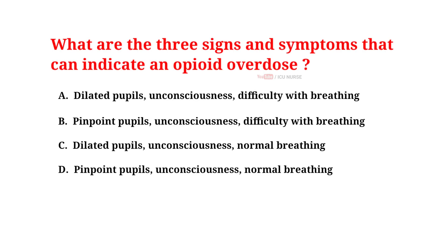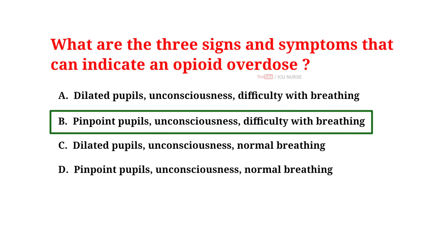What are the 3 signs and symptoms that can indicate an opioid overdose? A. Dilated pupils, unconsciousness, difficulty with breathing. B. Pinpoint pupils, unconsciousness, difficulty with breathing. C. Dilated pupils, unconsciousness, normal breathing. D. Pinpoint pupils, unconsciousness, normal breathing. The correct answer is B — pinpoint pupils, unconsciousness, difficulty with breathing.